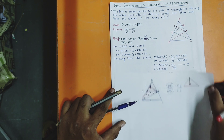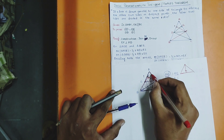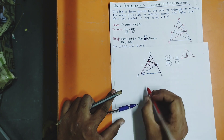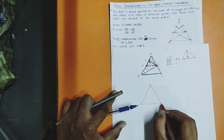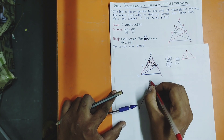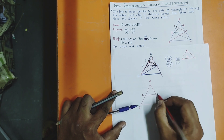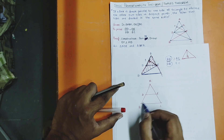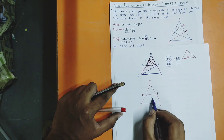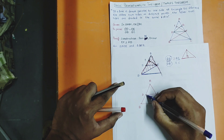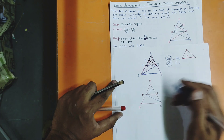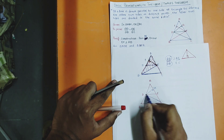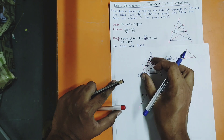Next, I want AE by EC. Same logic on this side. I will draw another triangle with B, C, A, D, E. Join DC and draw DG perpendicular to AE — same thing as what we did before.